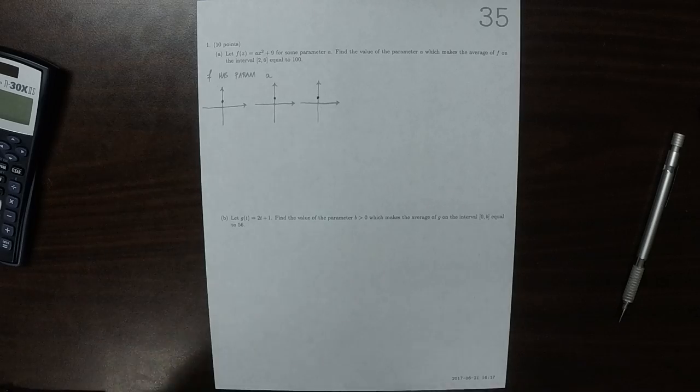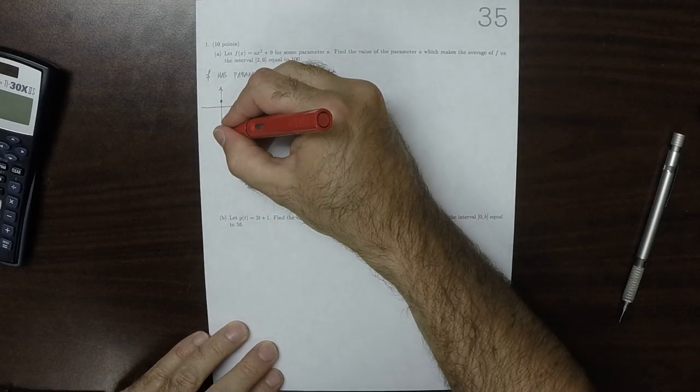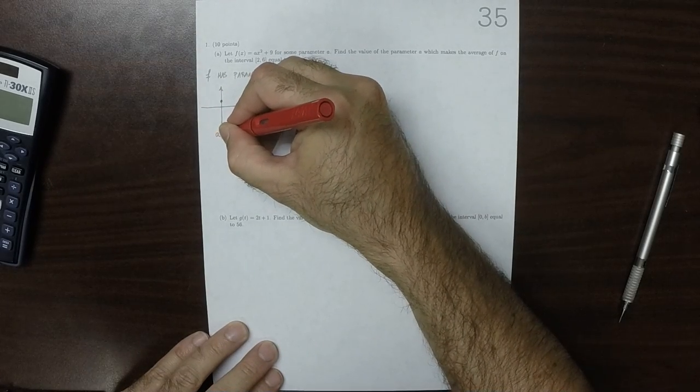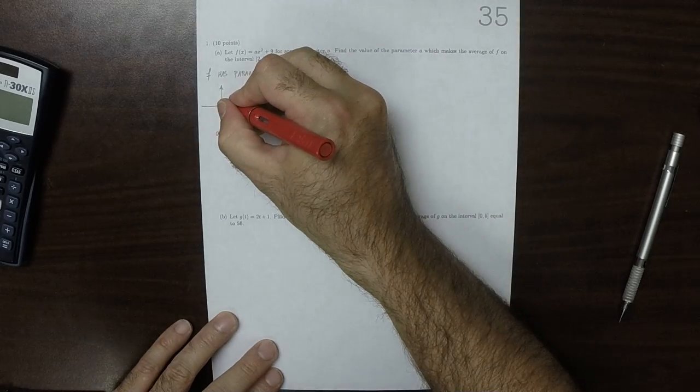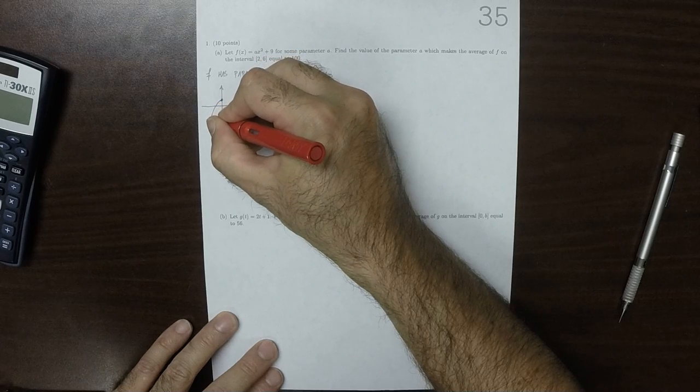Now, if we use a negative value for a, that means that we'll have a parabola that opens down, like this.